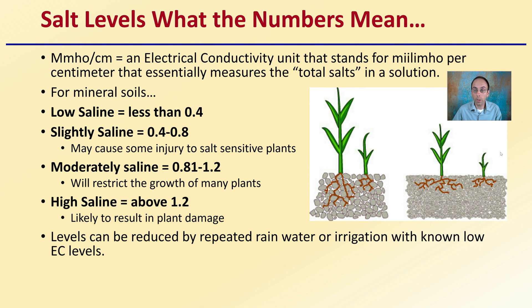If you see any numbers above 1.2, this will likely result in severe plant damage. Levels can be reduced by repeated rainwater or irrigation that is known to have low EC levels. This does not mean the damage is necessarily permanent — you can dilute those total salts or flush them out of the soil profile, which will help levels return to normal.